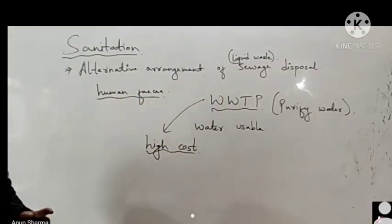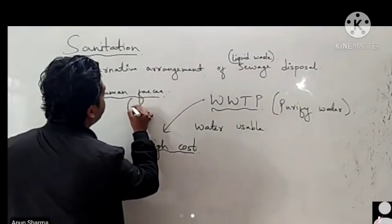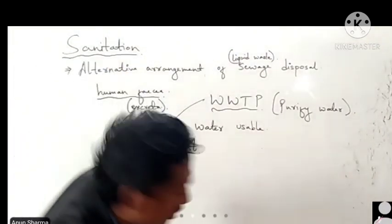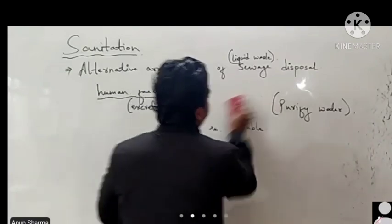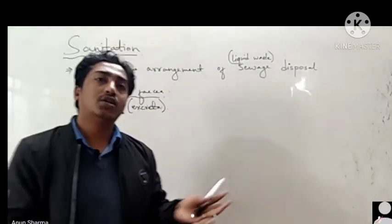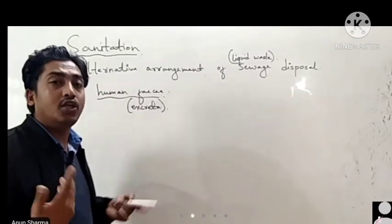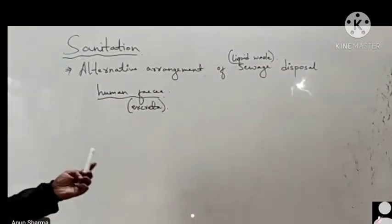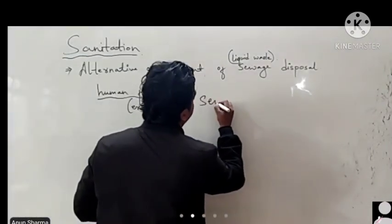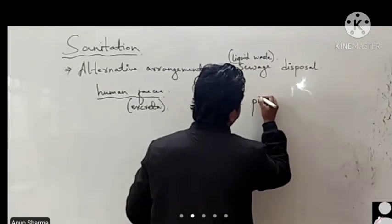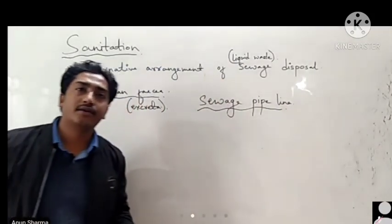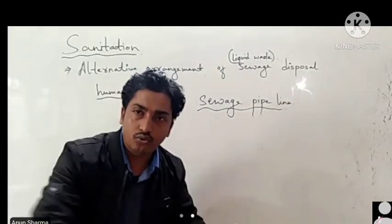In big cities, human excreta - meaning what comes from the toilet - is carried through sewage pipelines. There are pipelines from our toilets to certain treatment places, similar to the drainage system or wash basins.